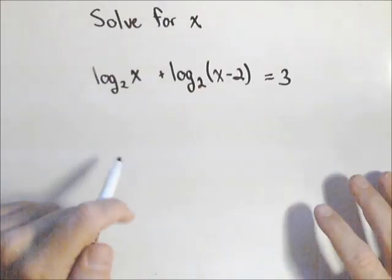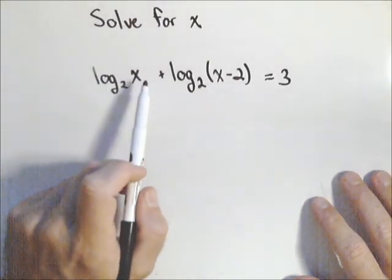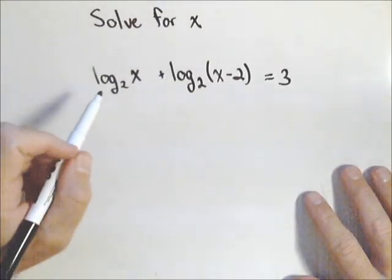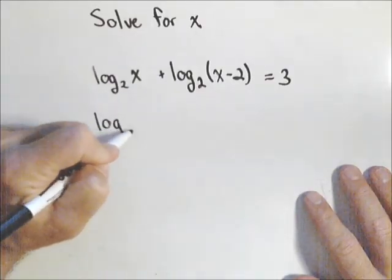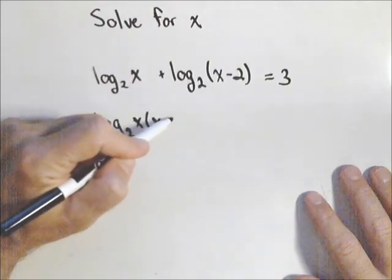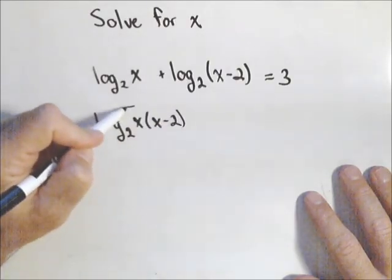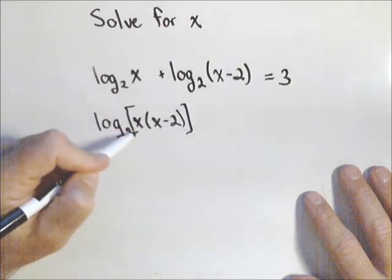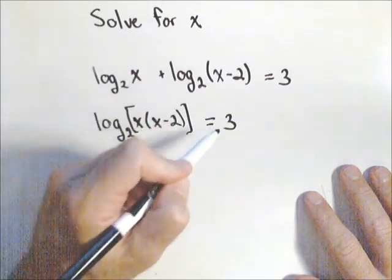Now because those logs have the same base, we can use the fact that we have the sum of two logs and write it as the product in a single log. So log base two of x times x minus two, and those are both in this same log, equals three.